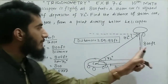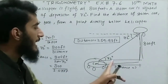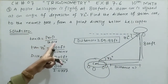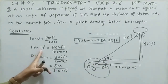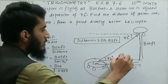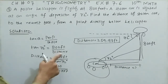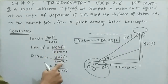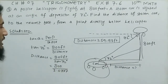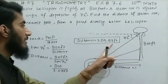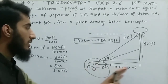Moving to the solution: the perpendicular distance is 800 feet and we find the base (adjacent side); the angle is 72 degrees. We use tangent theta = perpendicular divided by base. Tangent 72 degrees equals 800 feet divided by distance. Shifting: distance equals 800 feet divided by tangent 72 degrees. Tangent 72 degrees equals 3.0777. So distance equals 800 divided by 3.0777, giving 259.93 feet — the distance of the stolen car from the point directly below the helicopter.